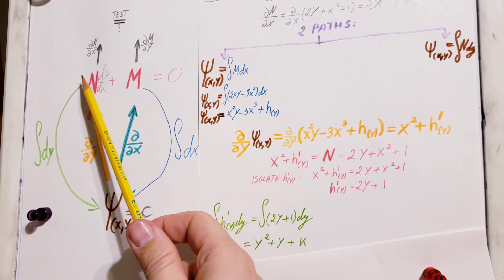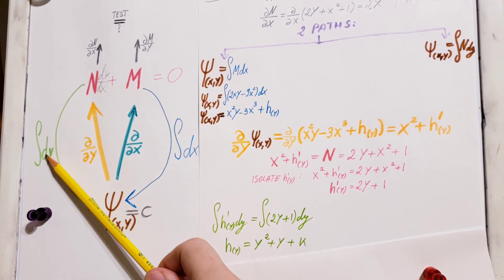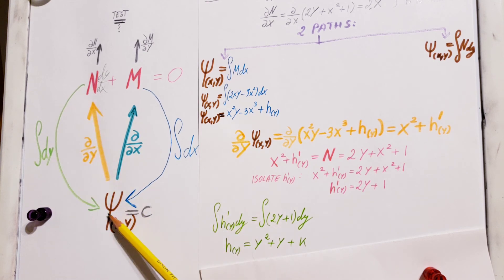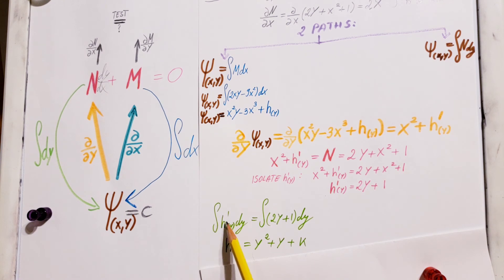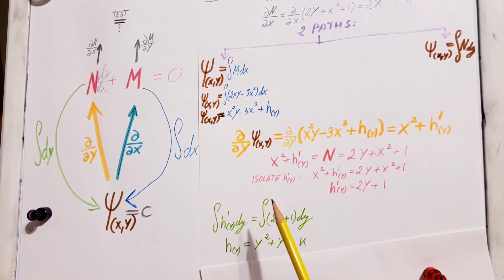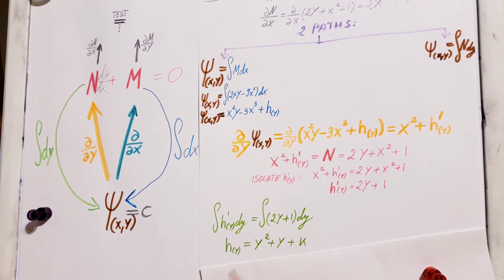For our last step, we come from N down to the parent function again using an integral with respect to y. I take an integral of both sides of what we found. The integral and derivative of h cancel, so all we have left is h(y). On the other side, the integral of 2y plus 1 becomes y squared plus y, plus a constant — I'll mark it k for now, since we'll be adjusting it as we go along.